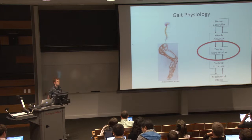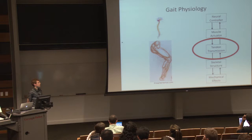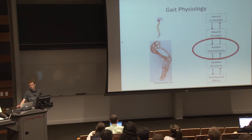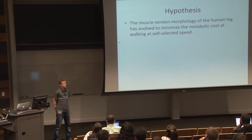In this talk, I'm going to focus on the transmission of the muscle force to the skeleton and tendon. This is a very important problem because the behavior of the muscle, its state, and its force is determined by the mechanical characteristics of the tendon. It's also true that the metabolic consumption of the muscles is determined by the tendon, since it's a function of muscle force and state. The hypothesis of this project was that the muscle-tendon morphology of the human leg has evolved to minimize the metabolic cost of walking.